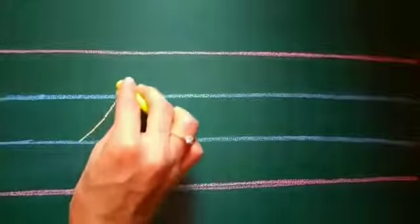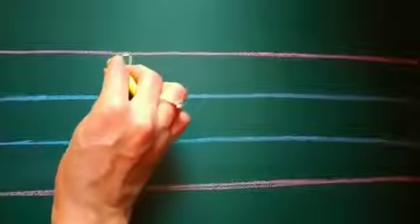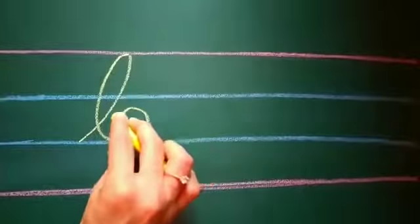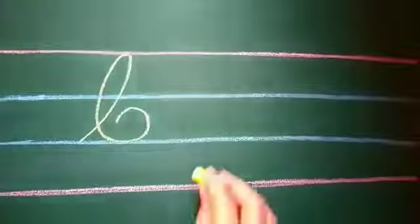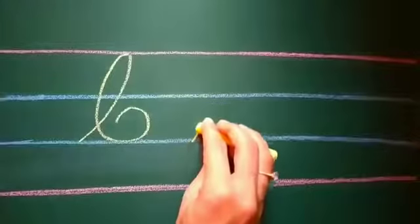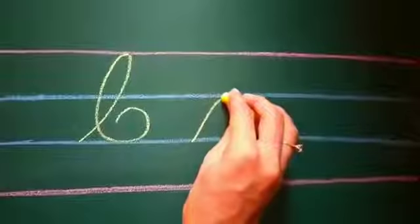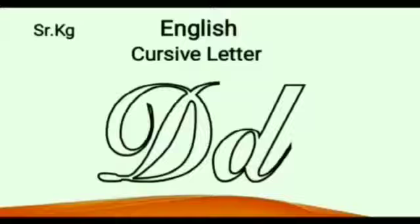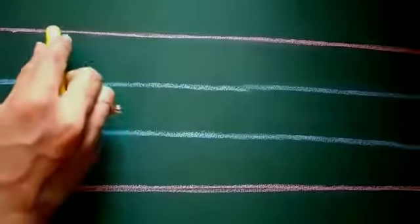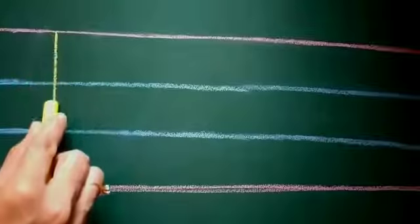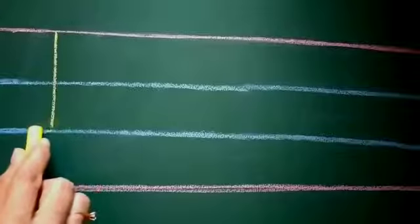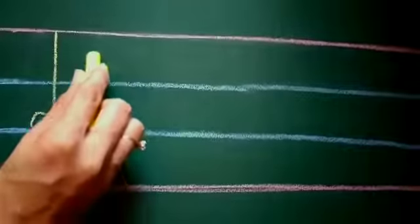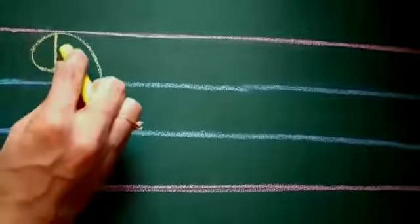Make a slanting line going upwards from the second blue line, come down making a big loop, making a curve inwards, make a small loop from the red line.